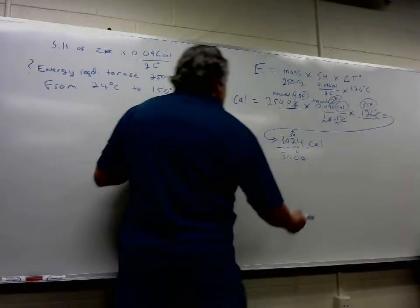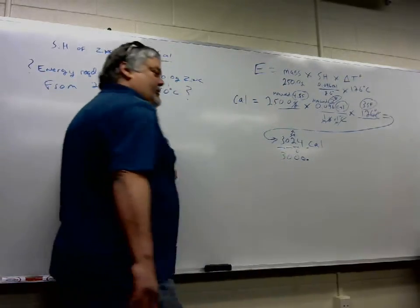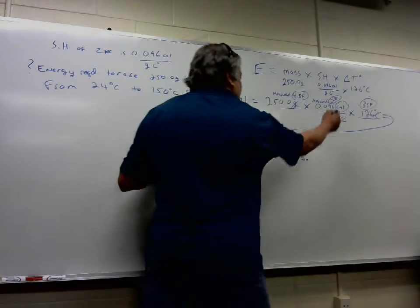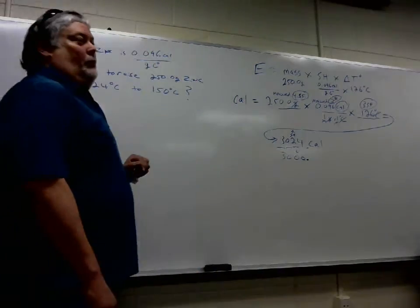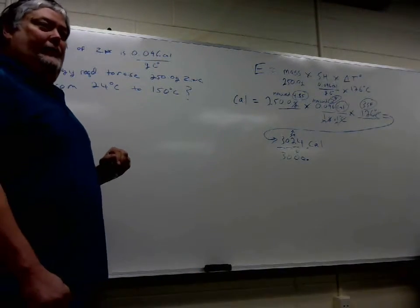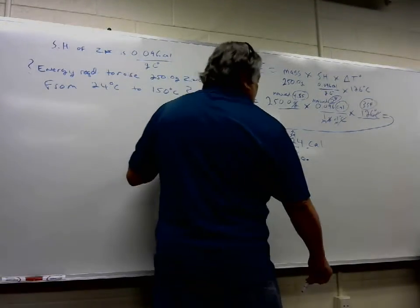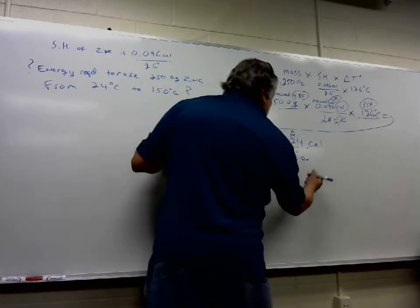What if I put a decimal there? Now how many significant figures? Four. That's a problem because we need to put our answer in two. What is the only way we can do that? Scientific notation.